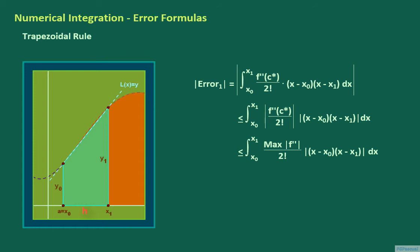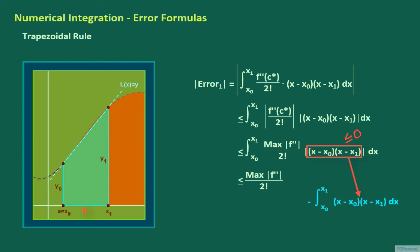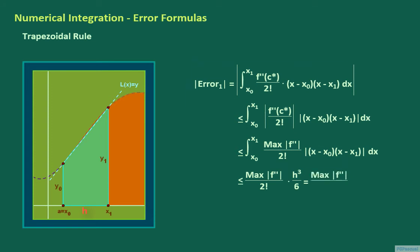The maximum of the absolute value of f double prime is just one value, and therefore this fraction is a constant that we can take out of the integral. One can easily check as an exercise that if x is between x sub 0 and x sub 1, the product x minus x sub 0 times x minus x sub 1 will be less than or equal to 0. So the integral of the absolute value of that product is the same as minus the integral of x minus x sub 0 times x minus x sub 1 without the absolute value. Using the fact that x sub 1 equals x sub 0 plus h, this integral can be found to be equal to minus h cubed divided by 6. Therefore, the absolute value of error sub 1 is less than or equal to the maximum of the absolute value of f double prime times h cubed, all over 12.